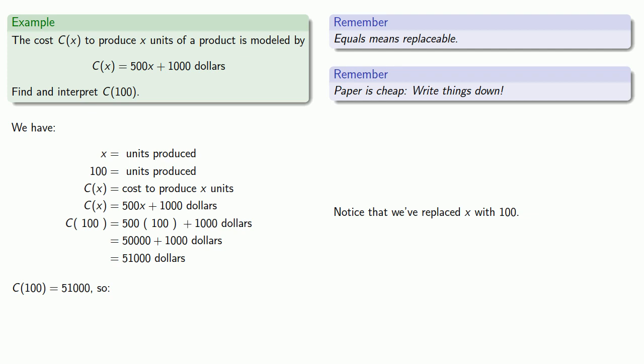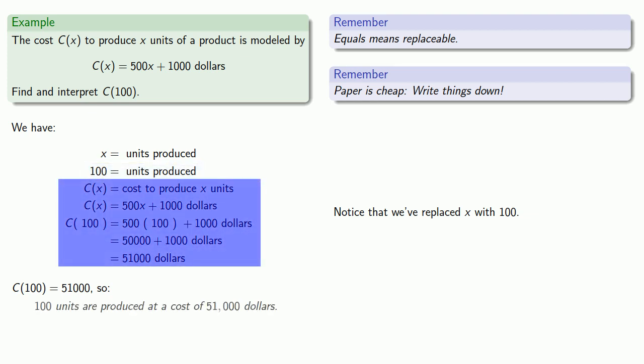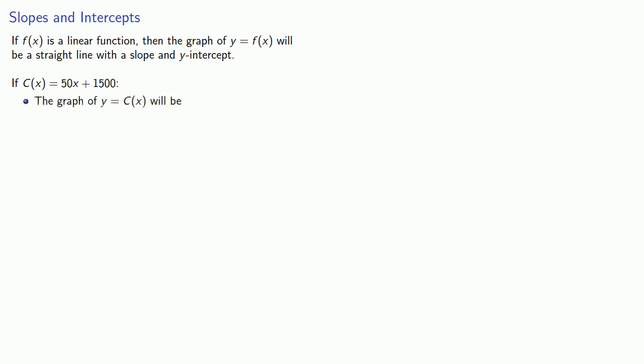And what this means is that 100 units produced at a cost of $51,000. If f(x) is a linear function, then the graph of y equals f(x) will be a straight line with a slope and y-intercept. Equals means replaceable.